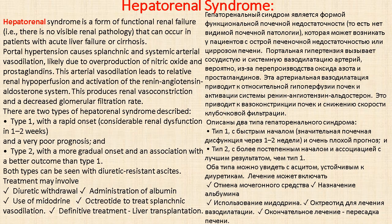Hepatorenal syndrome involves splanchnic arterial vasodilation, likely due to overproduction of nitric oxide and prostaglandins. This arterial vasodilation leads to relative renal hypoperfusion and activation of the renin-angiotensin-aldosterone system, producing renal vasoconstriction and decreased glomerular filtration rate. There are two types: Type 1 with rapid onset and very poor prognosis, and Type 2 with more gradual onset and better outcome. Both can be seen with diuretic-resistant ascites. Treatment involves diuretic withdrawal, administration of albumin, use of midodrine, octreotide, and definitive treatment is liver transplantation.